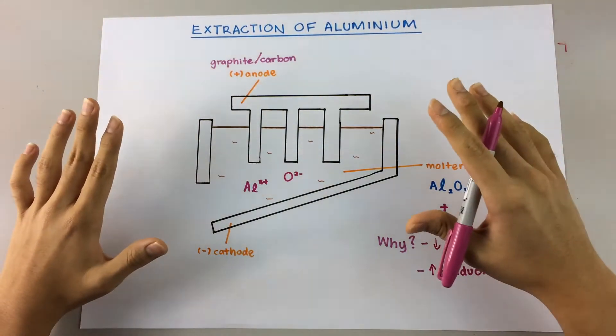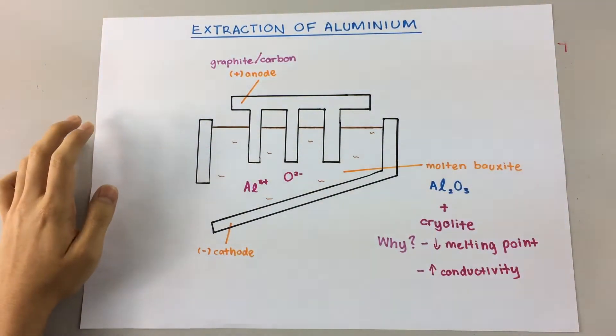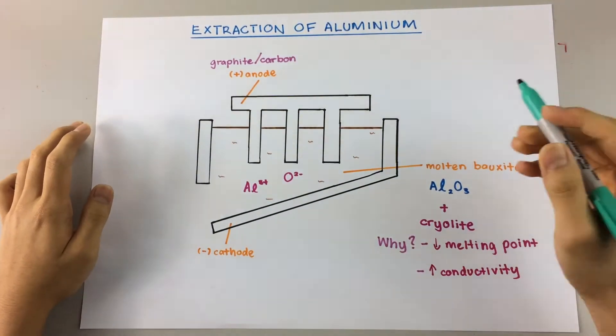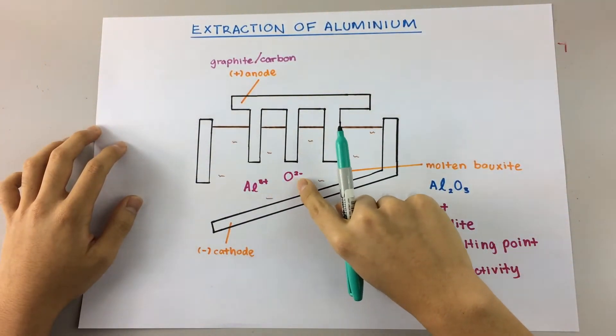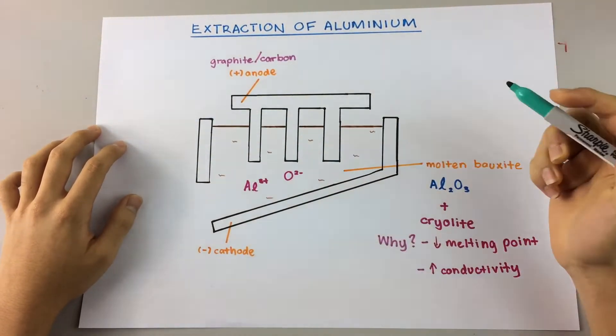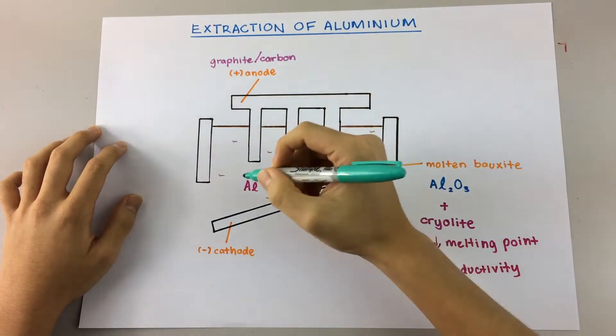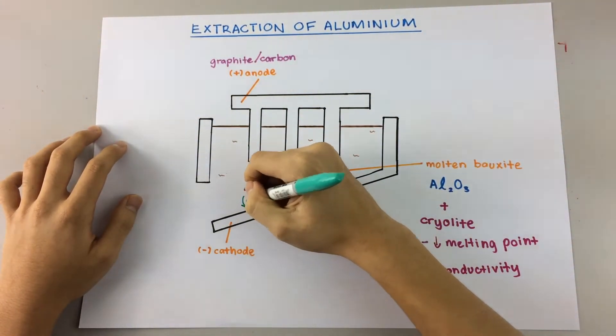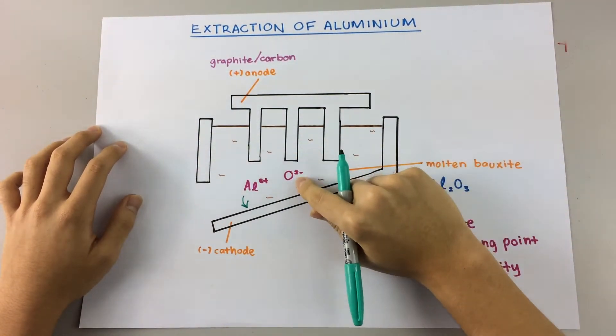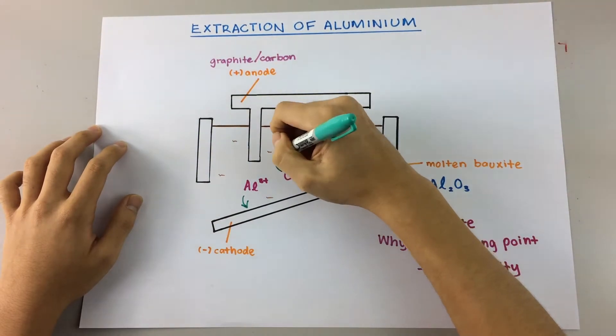So let's begin the electrolysis process. The ions in the solution, Al3+ and O2-, will be attracted to their respective electrodes. The positively charged Al3+ will be attracted to the negative cathode. And the negatively charged O2- will be attracted to the positive anode.